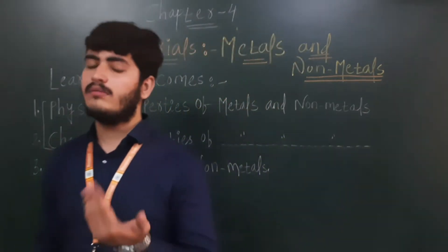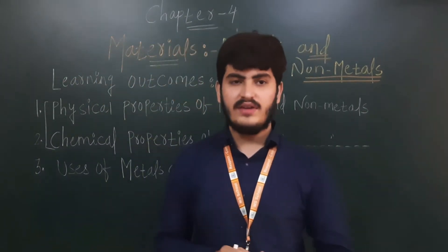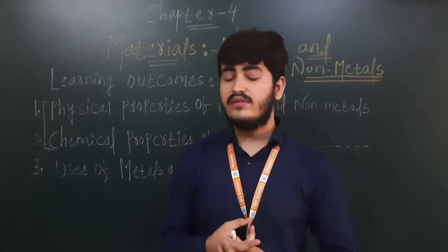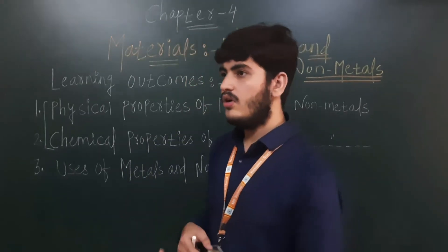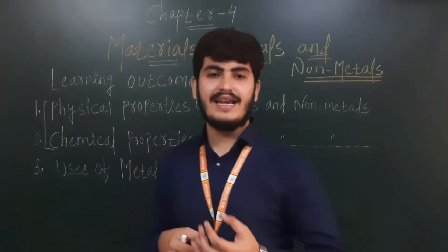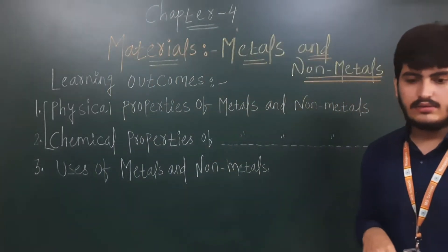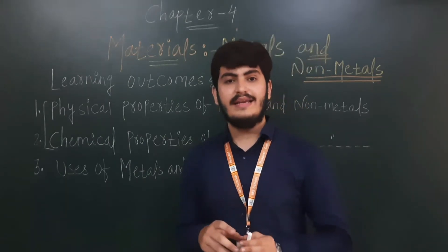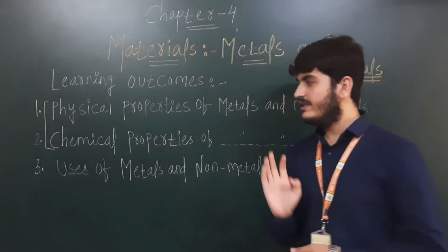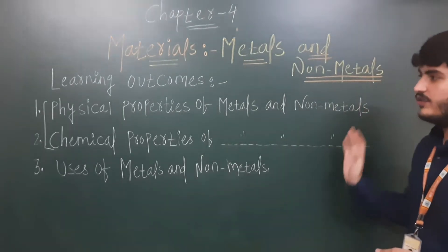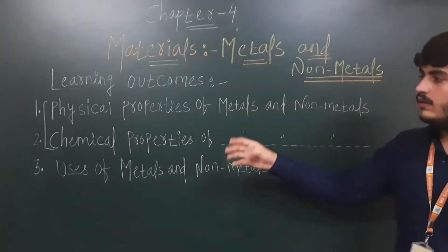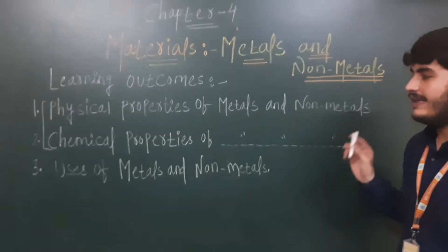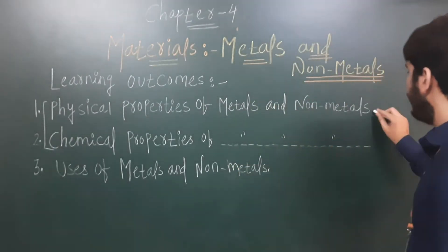How metals are useful in day-to-day life and how non-metals are useful — for example, metals like iron, gold, and silver, and non-metals like phosphorus, oxygen, and carbon which are gaseous non-metals. So these are the three learning outcomes: physical properties of metals and non-metals, chemical properties of metals and non-metals, and uses of metals and non-metals.